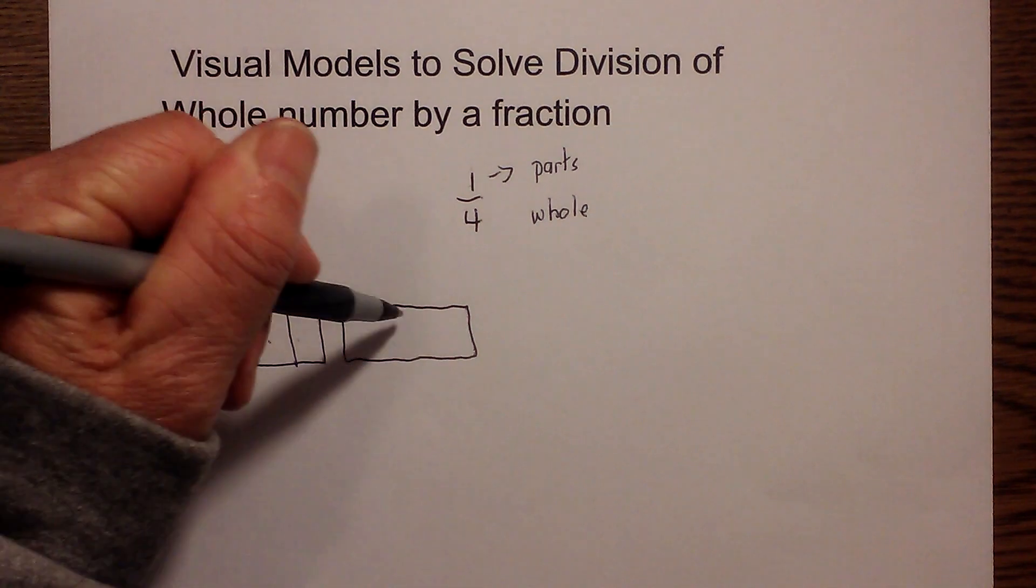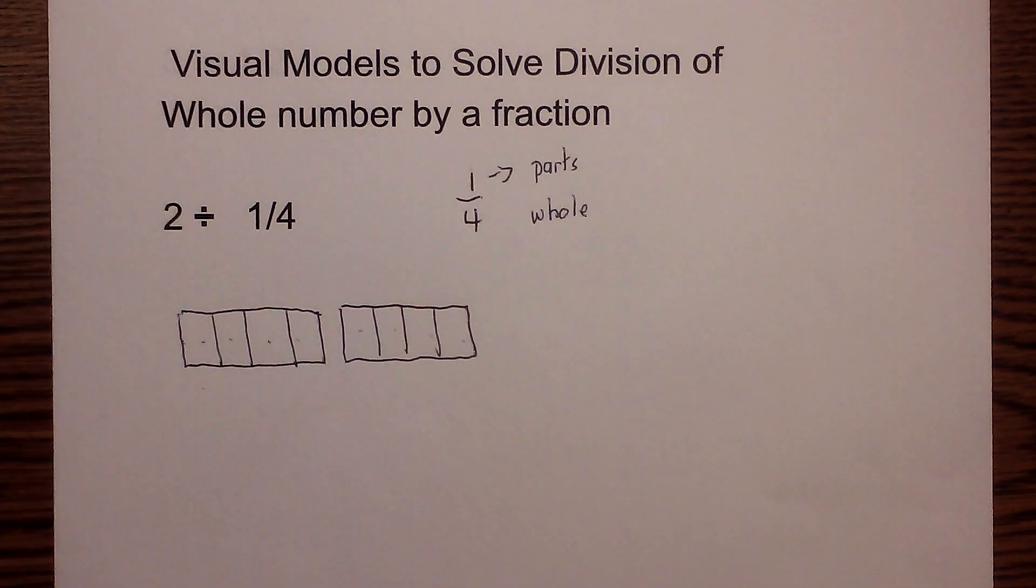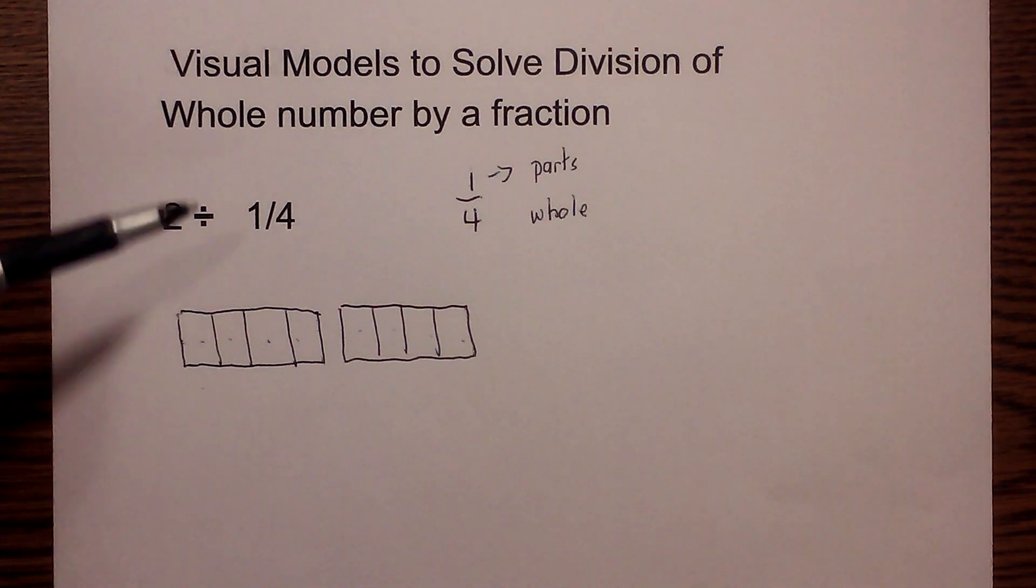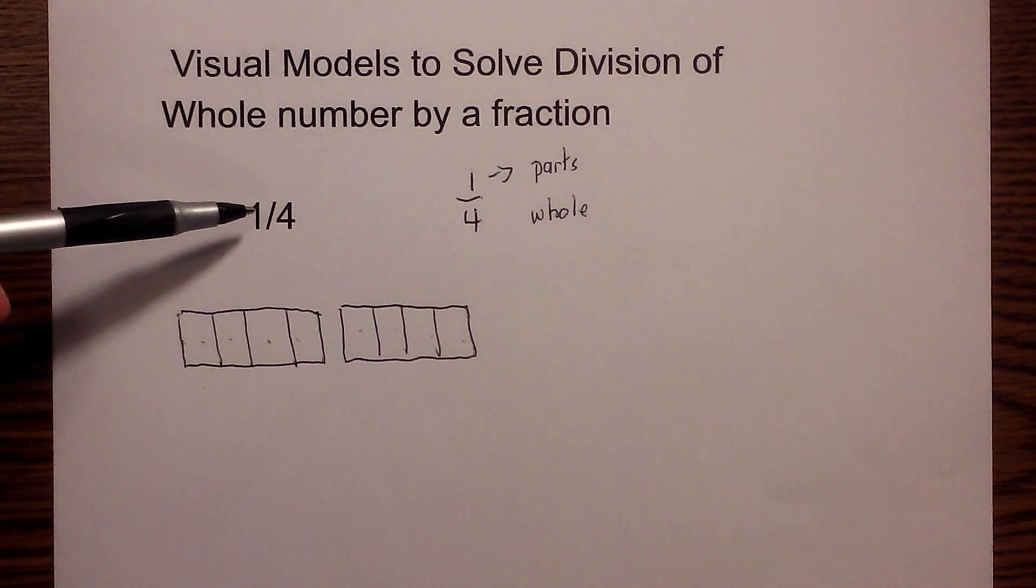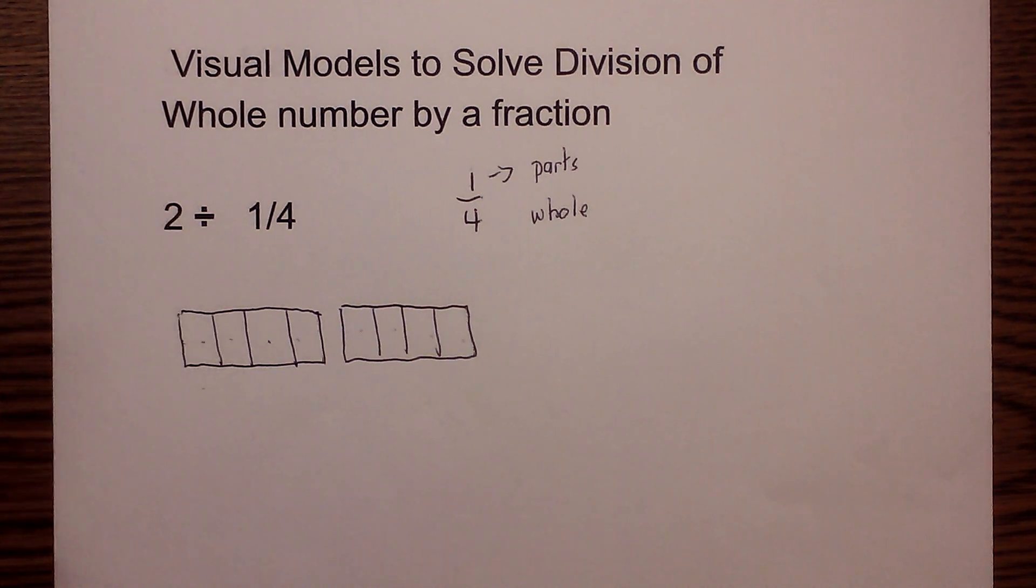There we have four parts. One, two, three, four. Then one, two, three, four. Again, one, two, three, four. Now I want to know how many of one part of these four that I have.